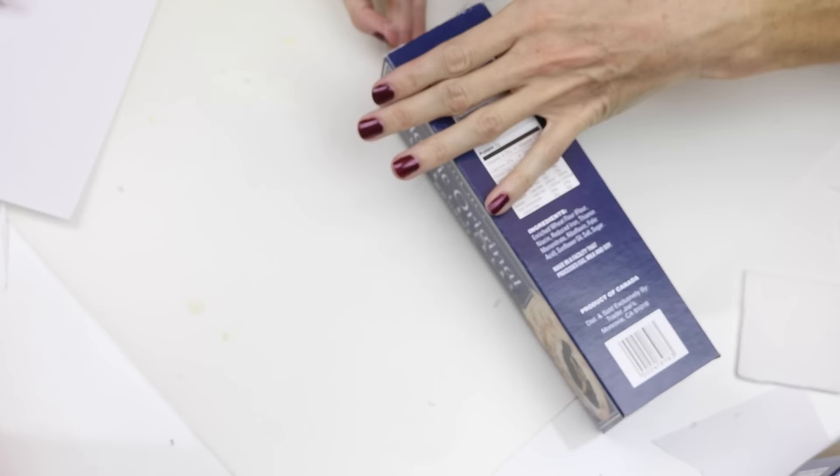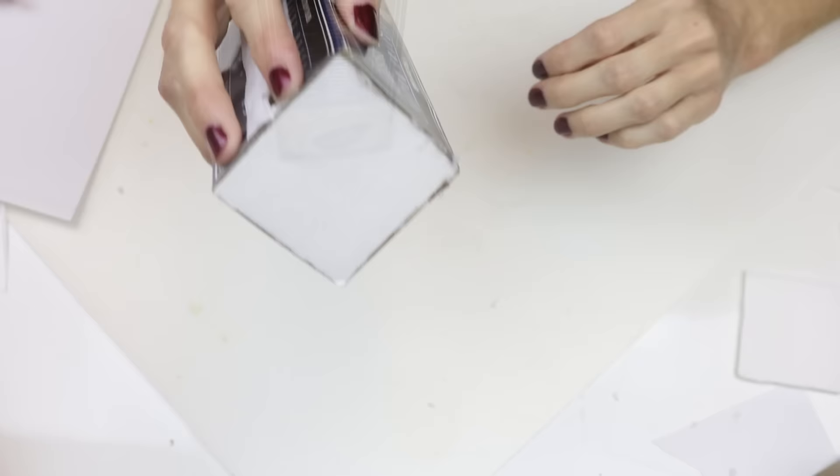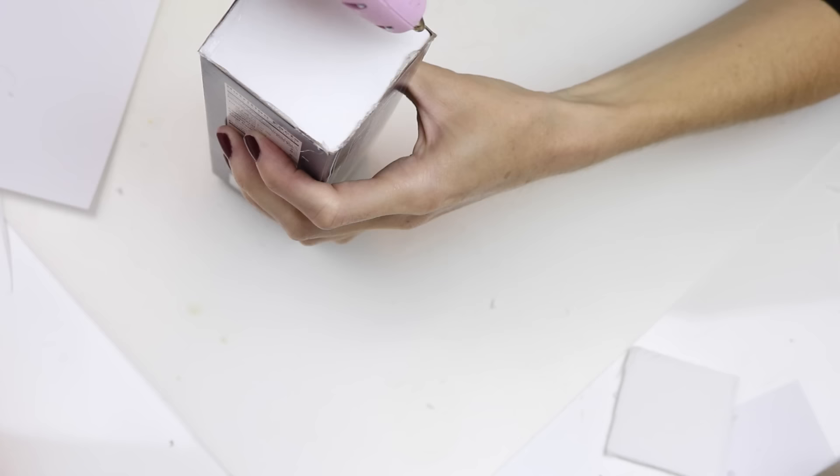Once I had the square in place, I then just hot glued around the edges to make it a little more secure. You will want to repeat this process for the other end of the box.